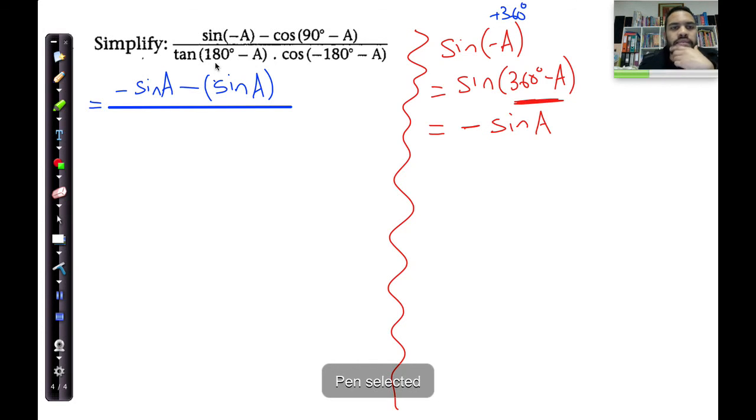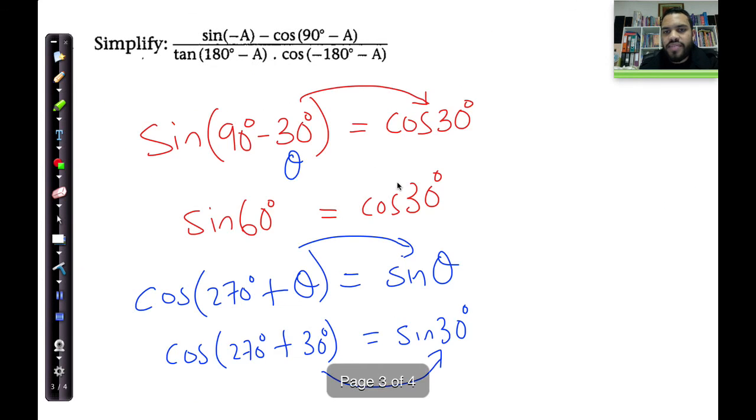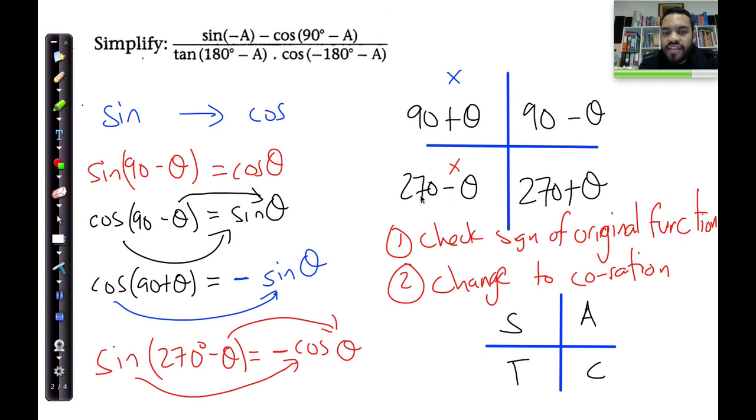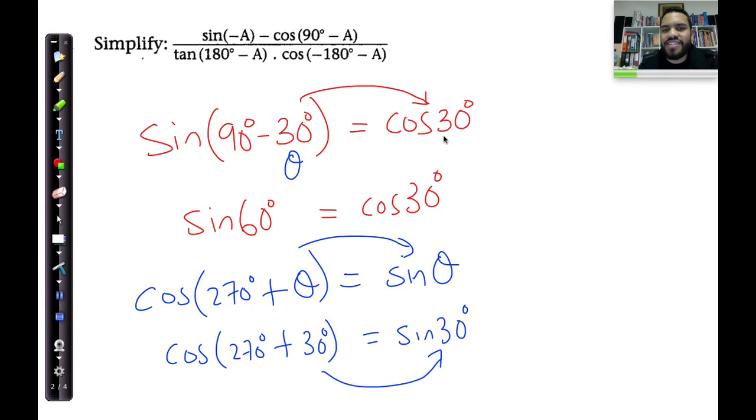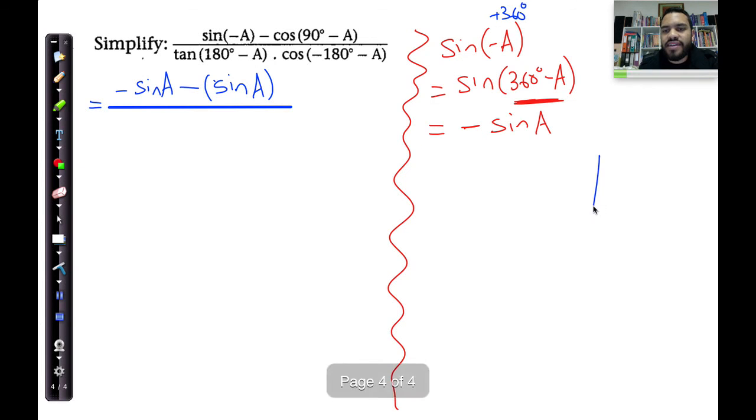Okay. Now, tan of 180 minus A. 180 minus, that's not a co-ratio. Co-ratios only look like the form of 270 minus, 270 plus, 90 minus, 90 plus. What 180 minus looks like is actually this. 180 minus is over here. Right? This is 180 plus. This is 360 minus. And this is theta. Or in our case, I started using A. Okay, so tan 180 minus. Tan in the second quadrant is negative. So that becomes negative tan of A. Multiplied by cos of 180 minus 180 minus A. So this whole thing is negative.